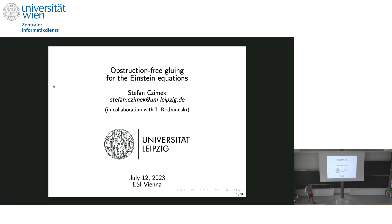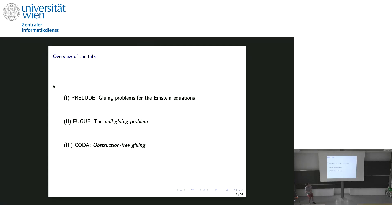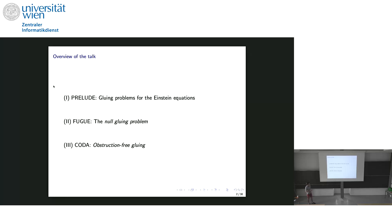Let me give you an overview of the talk. Because we're in Vienna, the city of music, I want to use musical descriptions. First, I'm going to have a prelude where I will generally talk about gluing problems for the Einstein equations — give a short historical motivation and show how our approach of obstruction-free gluing comes in. Then I will turn to the fugue, where we introduce the null gluing problem starting with Aretakis's work for the scalar wave equation, then moving to the null gluing problem for the Einstein equations. The coda is about obstruction-free gluing, where we resolve issues that remained open during the fugue.